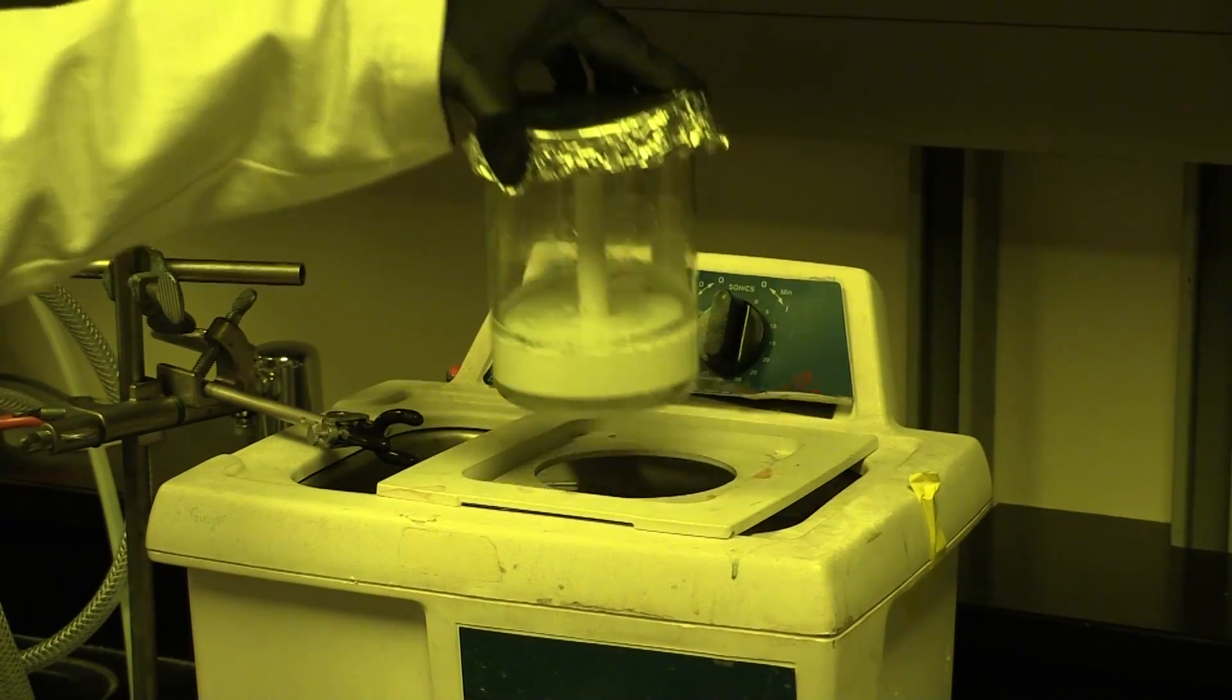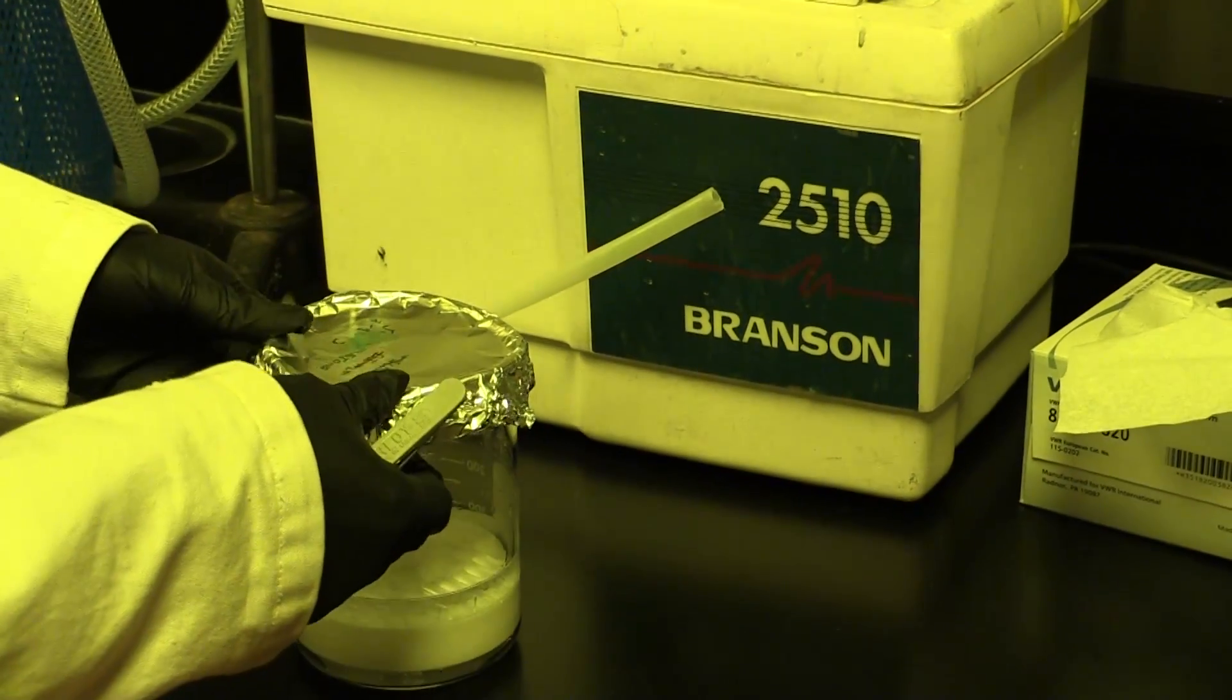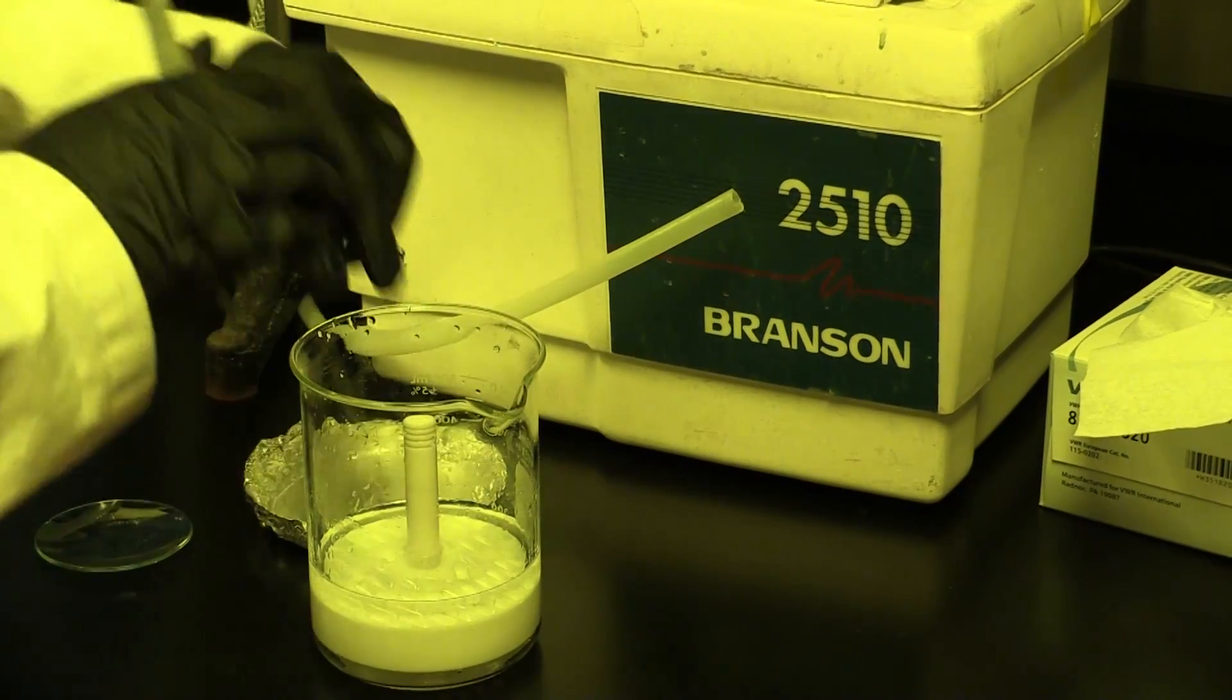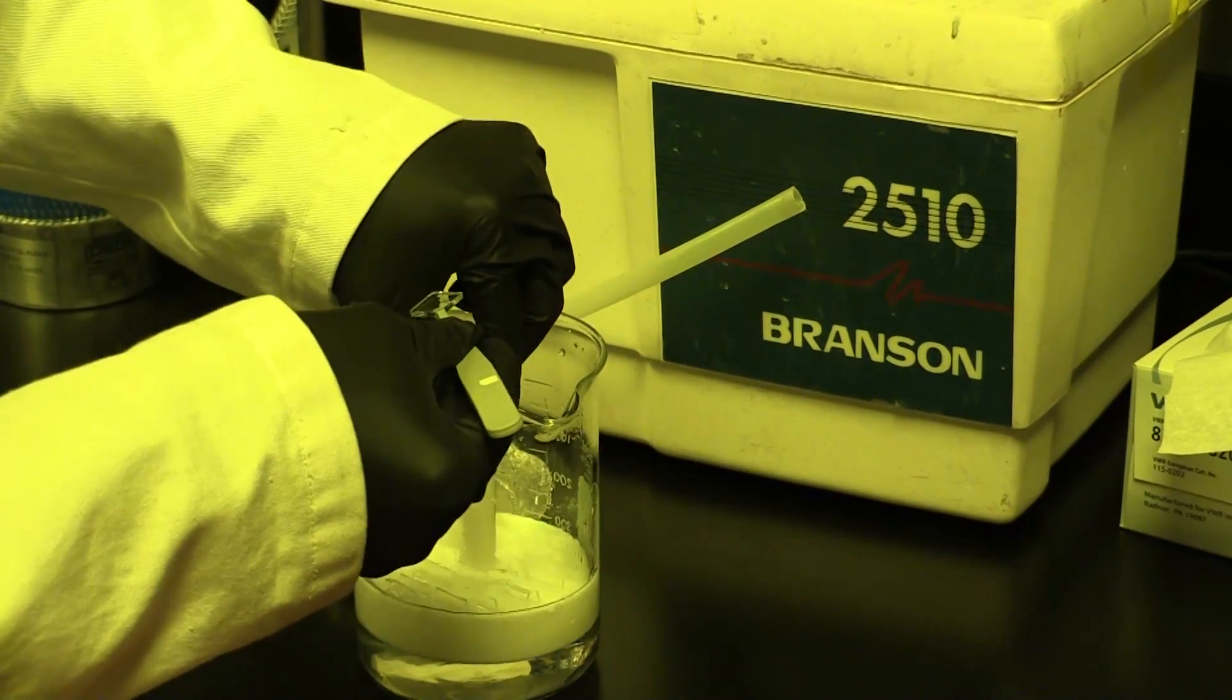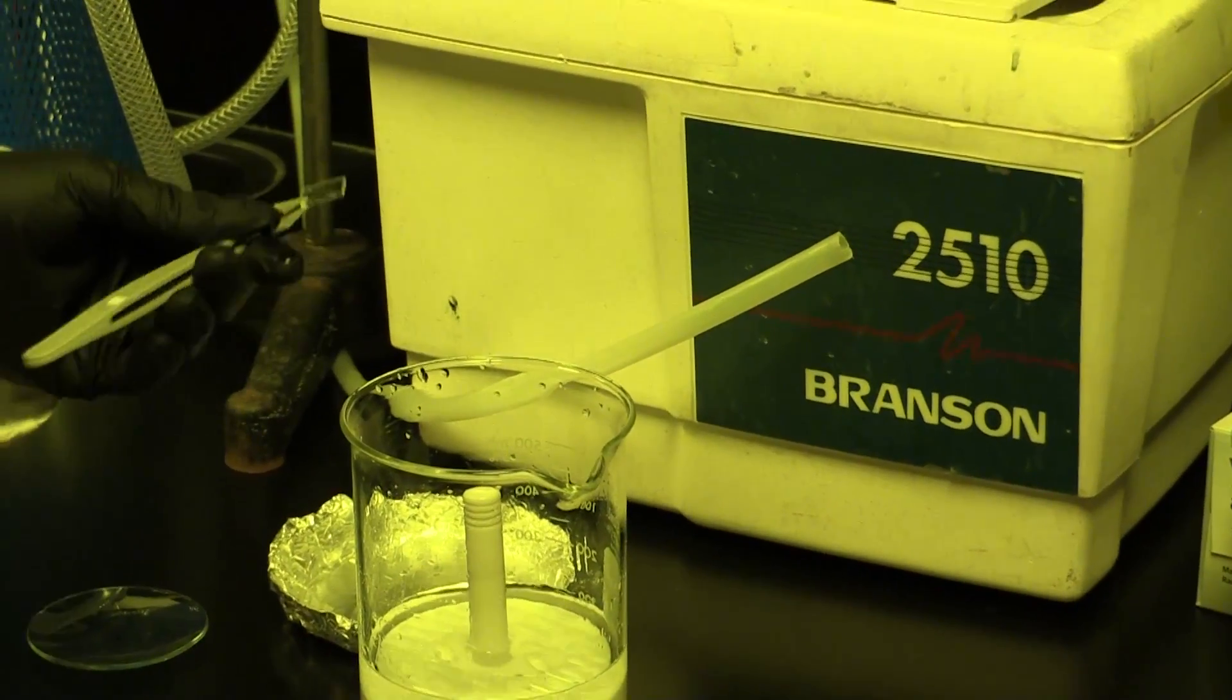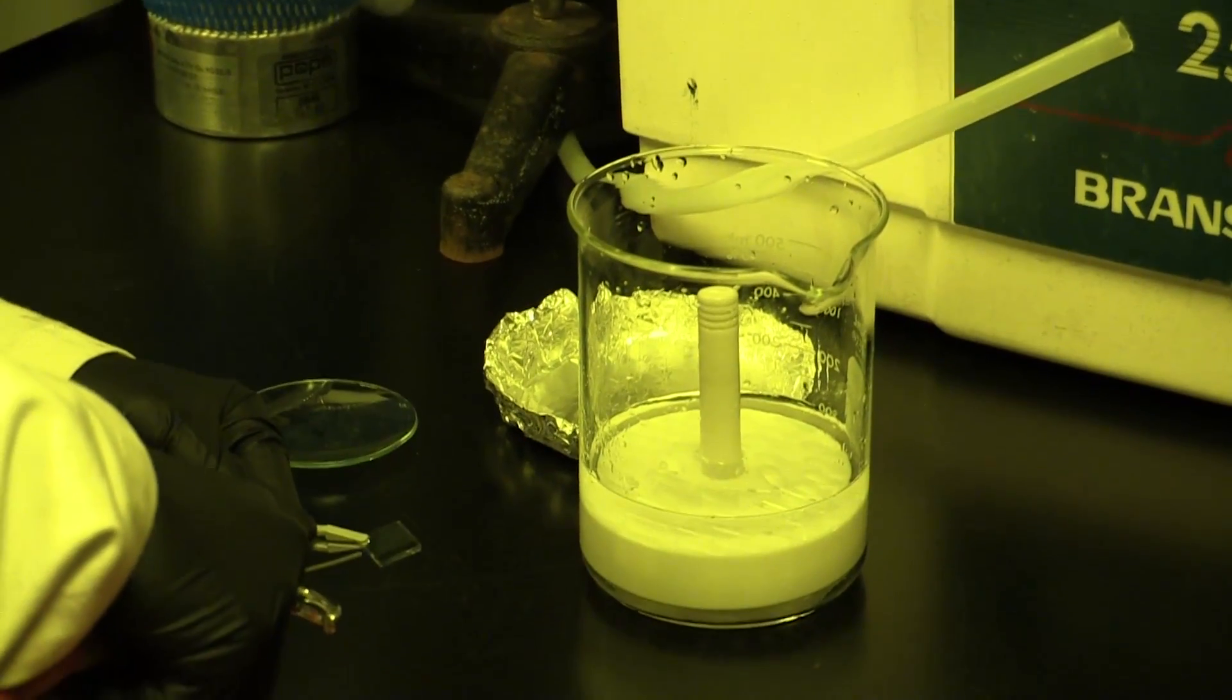Next, we'll take this substrate and sonicate it in 1% micro-90 detergent, deionized water, acetone, and finally isopropyl alcohol sequentially for 20 minutes each to clean the FTO. After the sonicating wash cycles are finished, we'll take out the FTO substrates and blow them dry with a stream of dry nitrogen.